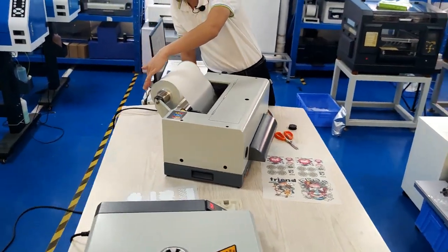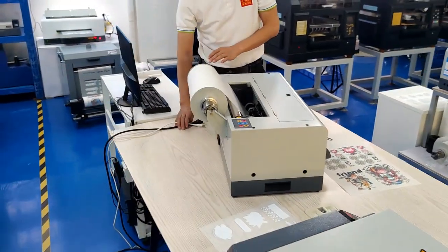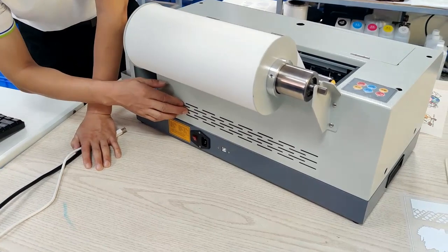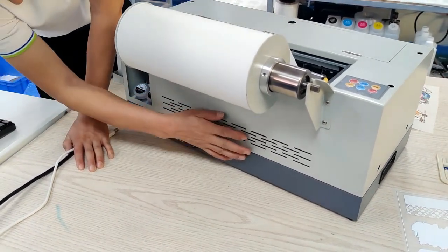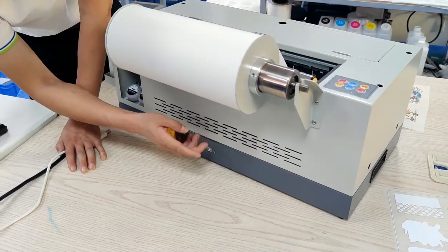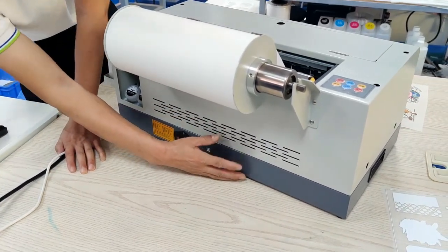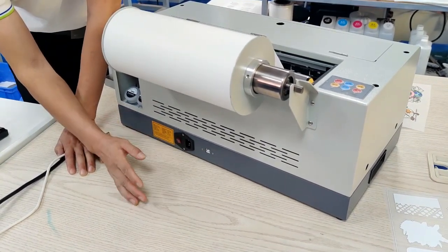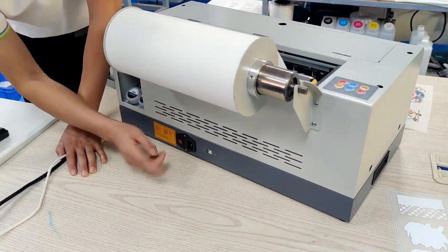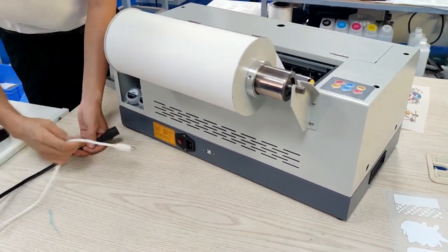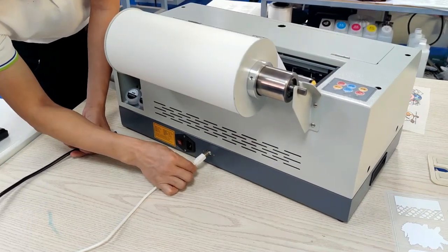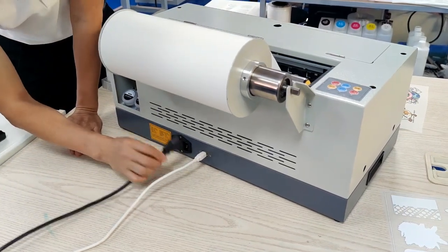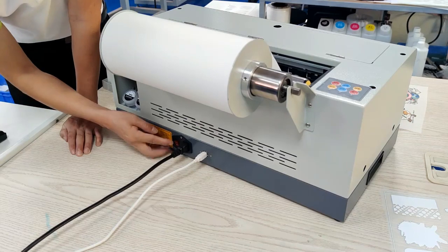Looking at the back of the machine, here are some small windows for the vacuum function where air runs out. This also cools the printer board, helping the printer run longer with continuous printing. Here we can see this part connects the USB cable, and here is the power cable and the switch.